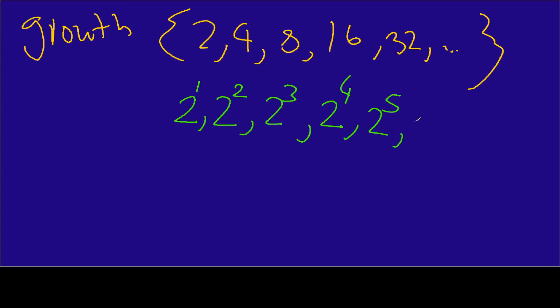Because we're doing an explicit sequence, if I go off to infinity it's going to be 2 to the n. Now I need to figure out what my formula is going to be. The explicit formula will be as follows: a sub n — where a is the term of my sequence — is going to equal 2 to the n.